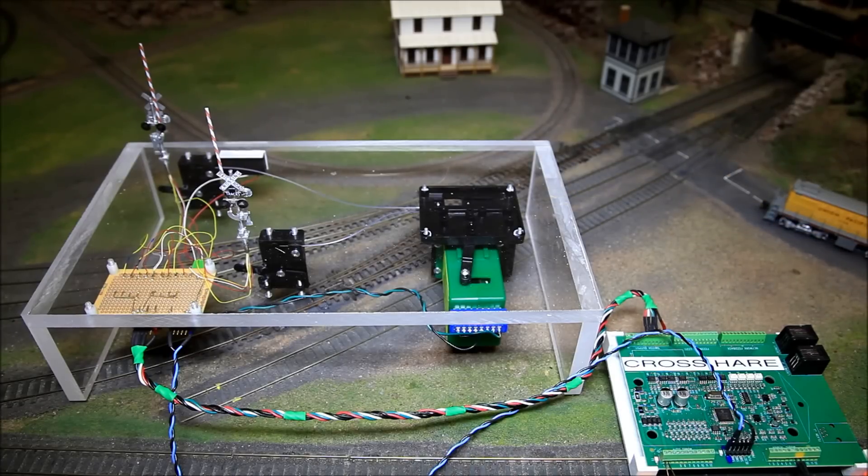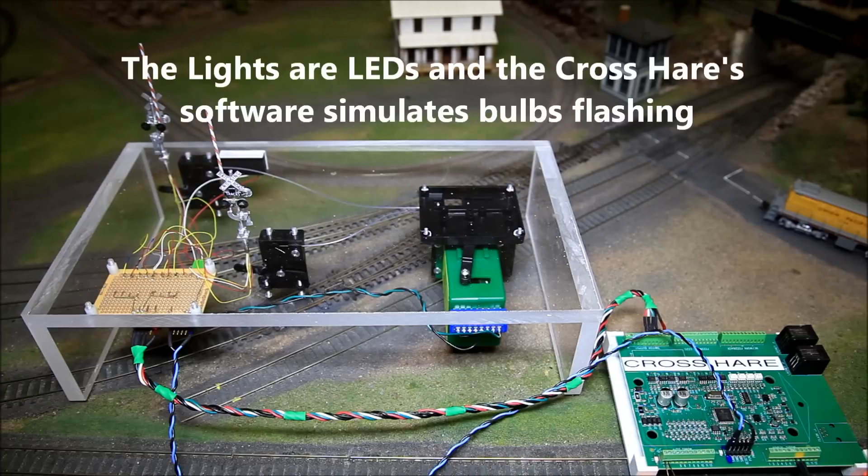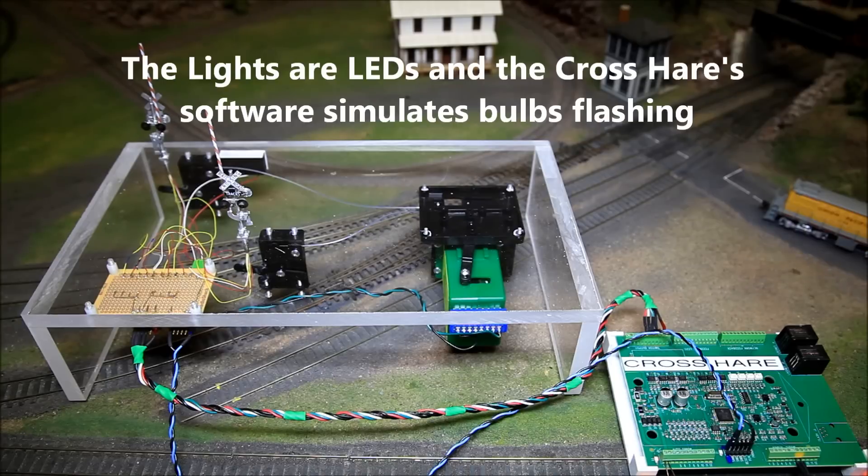In this case, the lights are simulating the incandescent variety, so the lights don't just turn off but they fade off like they would with a real crossing. Once you've got the crosshair, you've got everything you need to animate a full grade crossing.